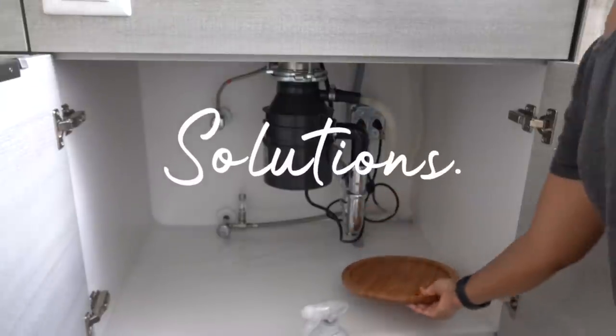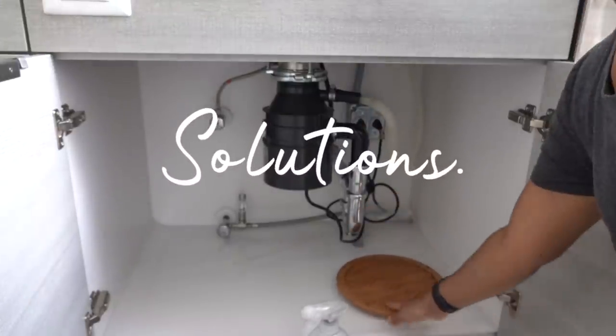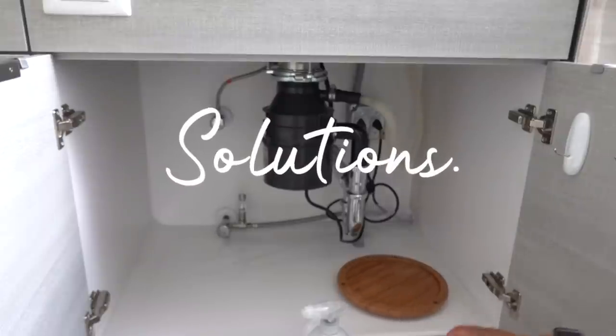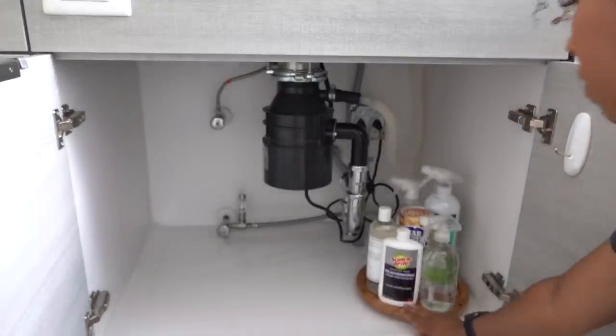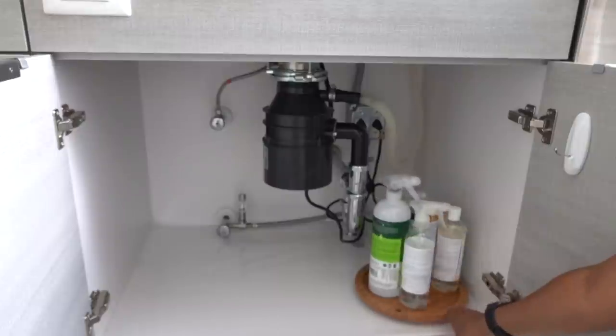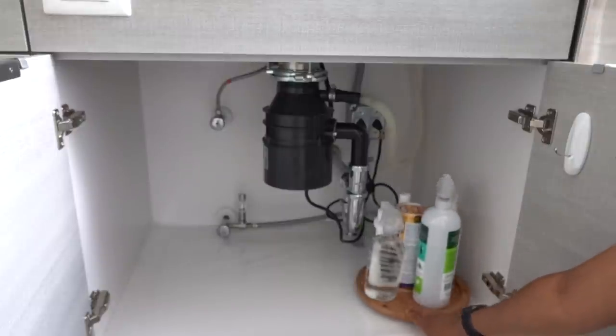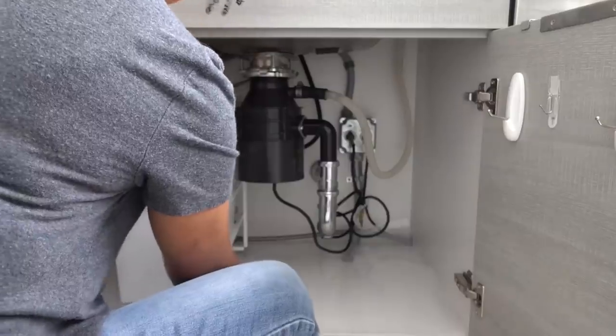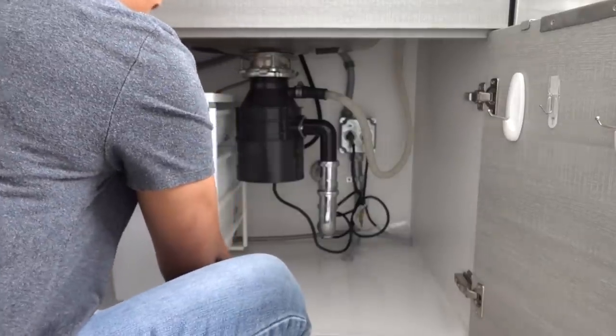So the next thing I wanna talk about is solutions. Under the sink, another good solution I recommend is a lazy susan, or sometimes referred to as a turntable. It basically, I mean, it's a turntable, so that way nothing is ever in the back, and the back is where things go to disappear.